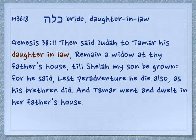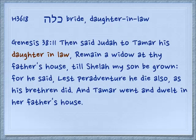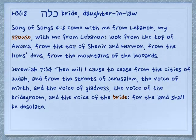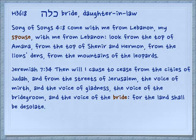As a noun, these letters form a word kala, which can be either bride or daughter-in-law. We see it first in Genesis 38:11: 'Then said Judah to Tamar his daughter-in-law, his kala, remain a widow at thy father's house till Shelah my son be grown.' Translated generically as spouse in Song of Songs 4:8: 'Come with me from Lebanon, my spouse, from the top of Amana, from the top of Senir and Hermon, from the lion's dens, from the mountains of the leopards.' It is a feminine noun translated as spouse, but it is the bride.